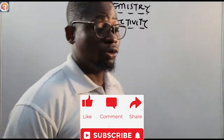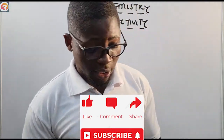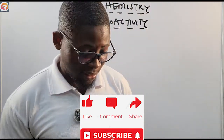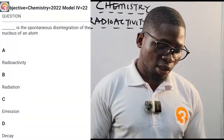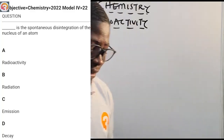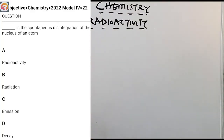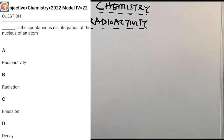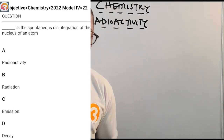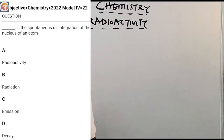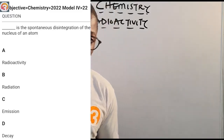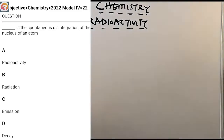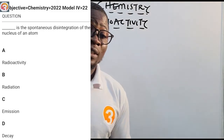Today I'm going to cover radioactivity. Do not forget that this tutorial is brought to you by the Old Three Schools Jam Up app. A question from the app pertaining to radioactivity — this is a 2022 question number 22: 'Dash is the spontaneous disintegration of the nucleus of an atom.' Options are: A) radioactivity, B) radiation, C) emission, D) decay.